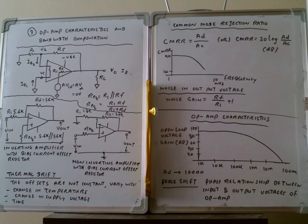In the next diagram, there are graphs plotting CMRR versus frequency. As frequency increases, the CMRR decreases, as you can see in the graphs. The noise in the output can be calculated using a formula involving AC by R1 plus 1. Now we are discussing operational amplifier characteristics.